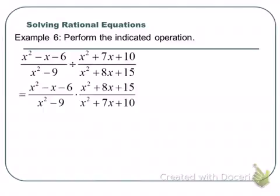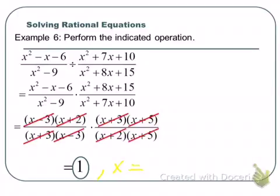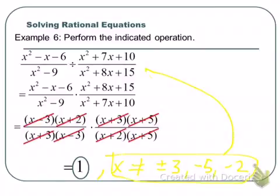For the third problem, we change division to multiplication, factor everything, and look what happens — everything cancels and we're left with 1. And clearly we would need a lot of excluded values here because x cannot be plus or minus 3, plus or minus 2, negative 5, and negative 2. If I put any of these values in there, I get 0 over 0 — and 0 over 0 is not equal to 1. So this expression is only equal to 1 as long as x is not equal to those values.